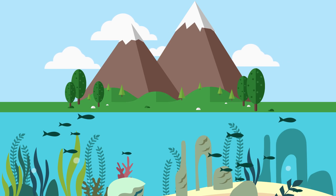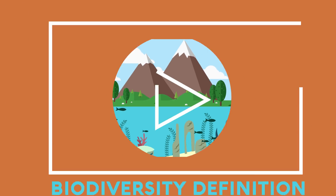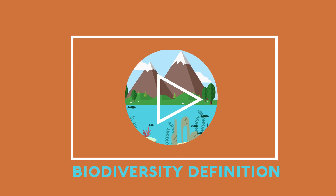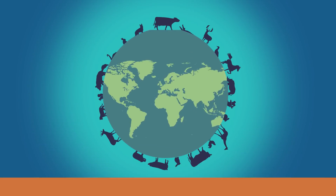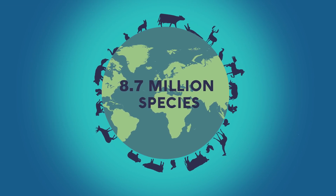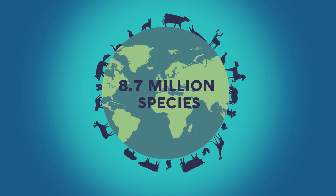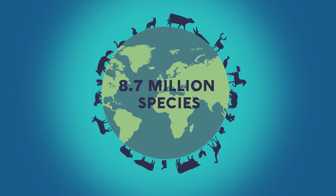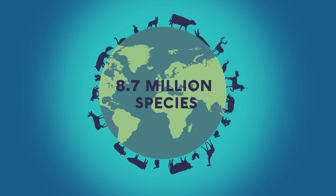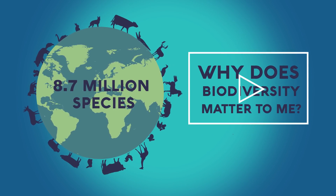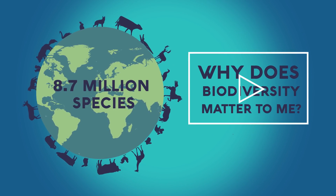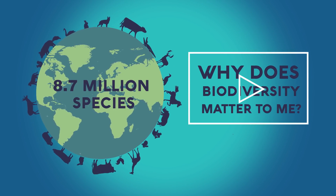Biodiversity is the variety of life, as we saw in this video. There are thought to be 8.7 million species on planet Earth, and biodiversity is of utmost importance to humans.